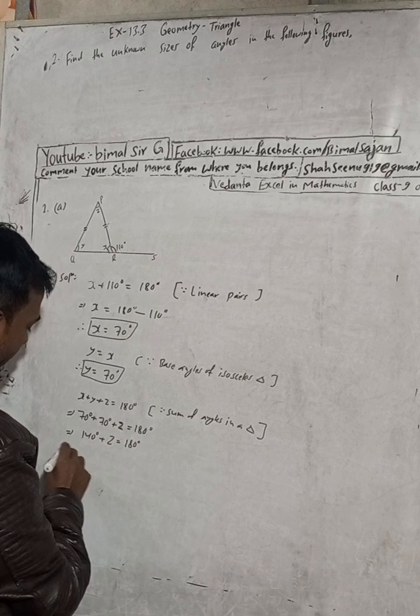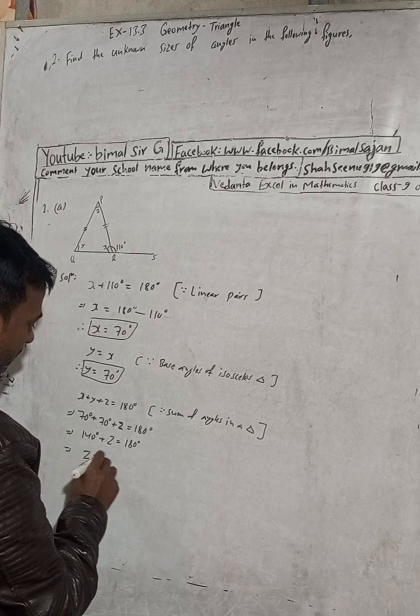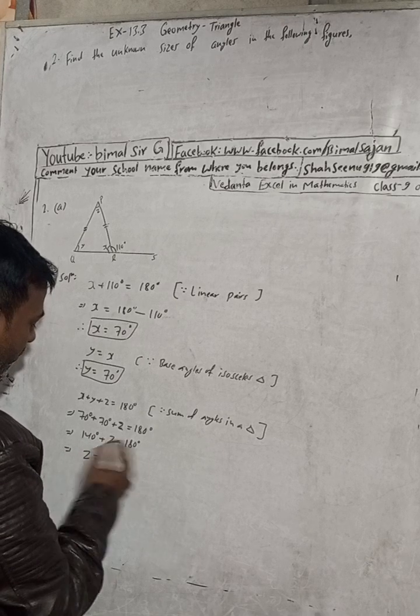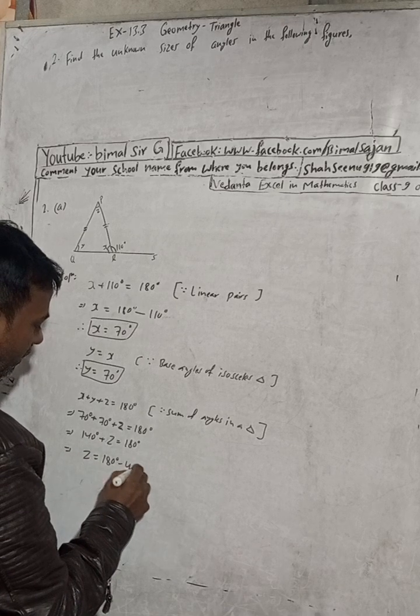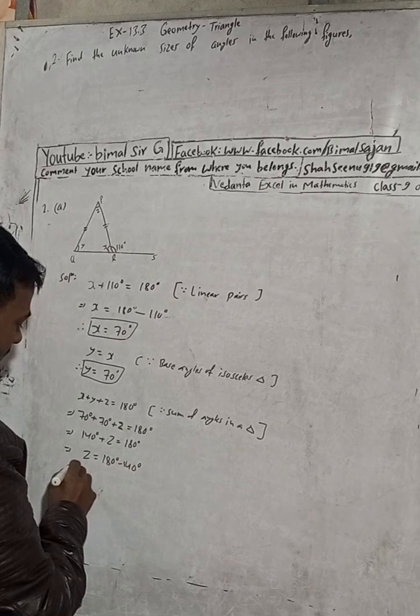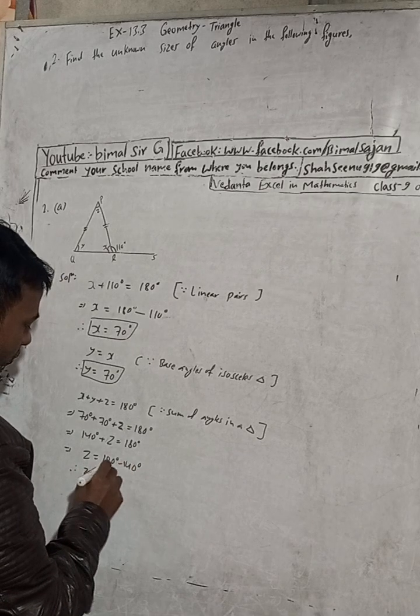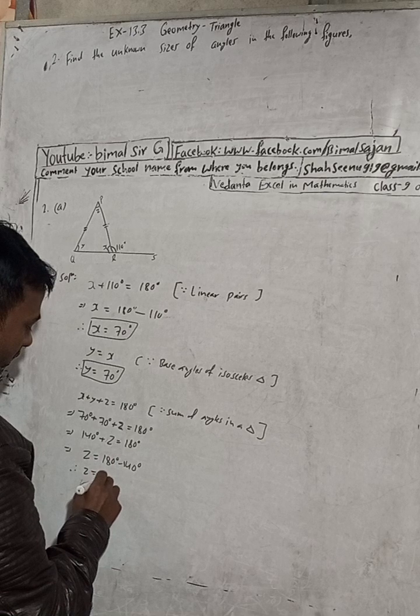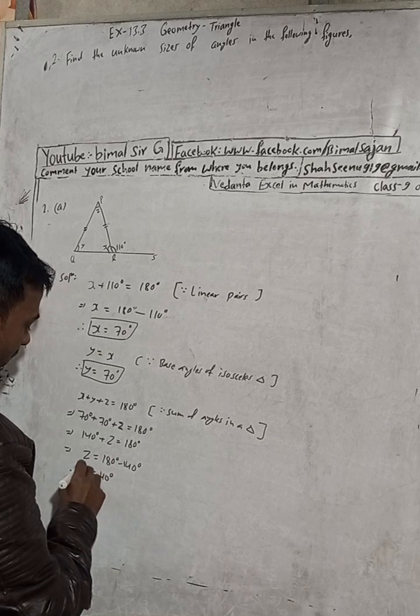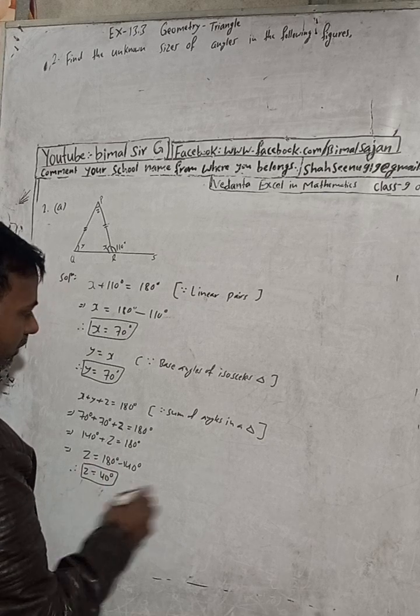This is 70, 70, 140 degrees plus z, 180 degrees. And this z keep as it is, 180 degrees, and this 140 degrees will become minus 140 degrees. Therefore z is equal to 180 minus 140, this is 40 degrees.